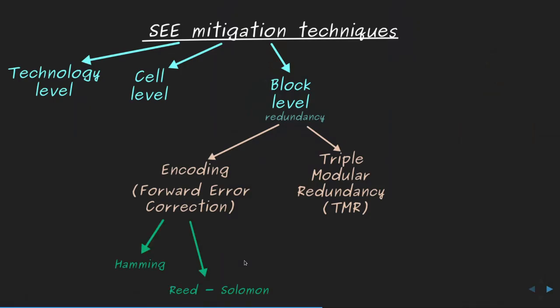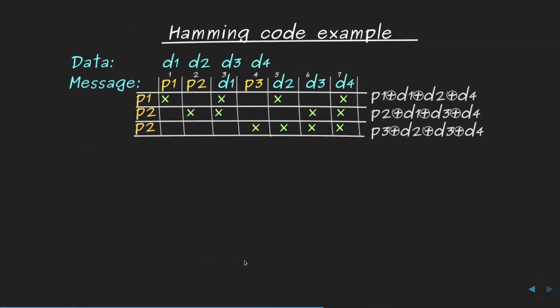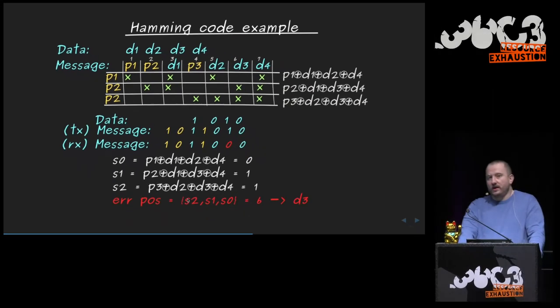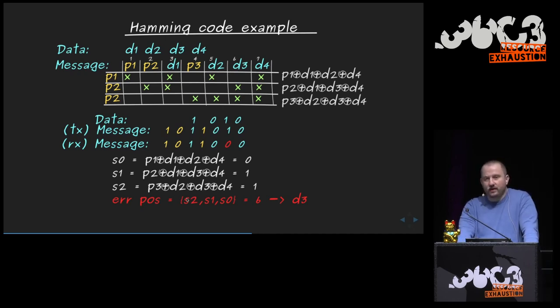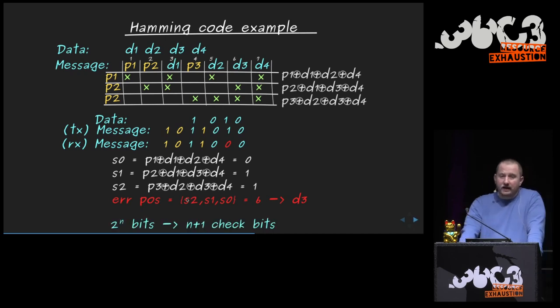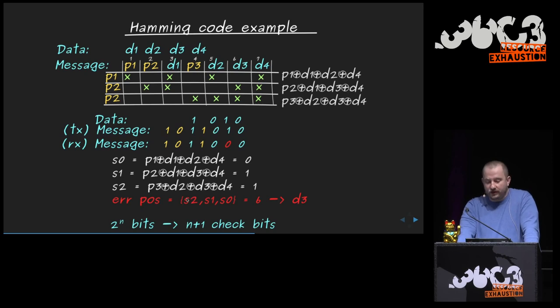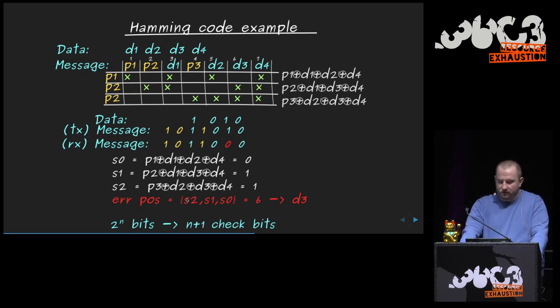If you don't want to redesign standard cells, mitigation can be applied at the block level using encoding. An example is Hamming code: to protect four bits, three additional parity bits are calculated according to a specific formula. These parity bits can be used to check the integrity of the internal state; if any parity bit is non-zero, the bits immediately become syndromes indicating where the error occurred, and this information can be used to correct the error. The efficiency improves as the state length increases.